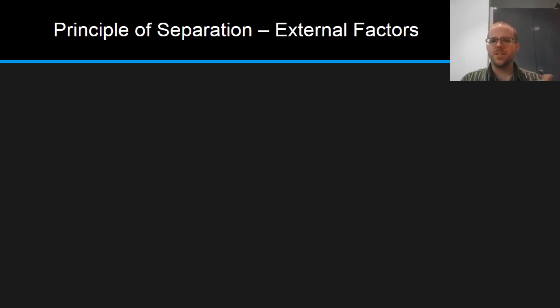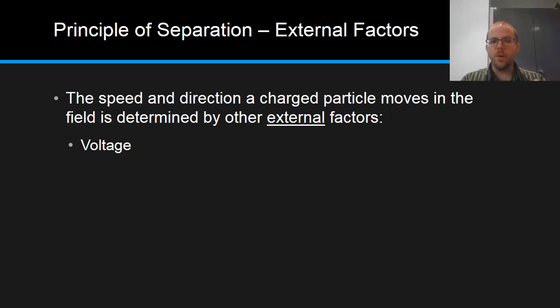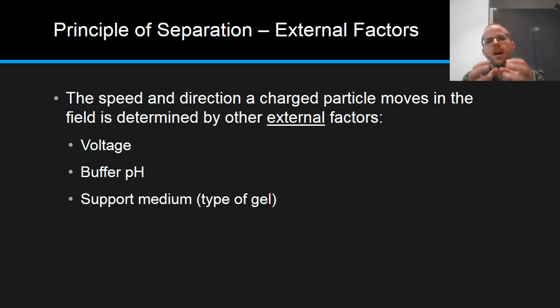And it's also affected by external factors to do with the environment. So first one would be voltage. As we increase the voltage, we will increase the speed because we increase the attraction of the charged particles to the electrode on the other side, and also the repulsion, in the case of DNA, the repulsion from the negative electrode as well. It's also affected by the buffer pH because that will determine the net charge on the particle itself and therefore its direction. The support medium, that is the type of gel or the type of paper, is going to affect the speed because the more it interacts with the gel, the narrower those spaces are, the longer it will take. And also we have temperature. As we increase the temperature, then we're also going to increase the speed. So that's some of the information that we have about electrophoresis as a separation technique in forensic science.